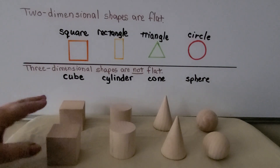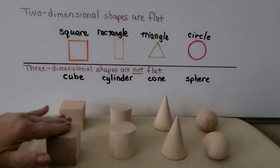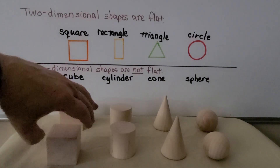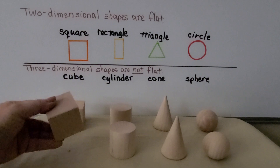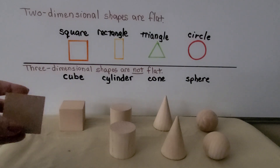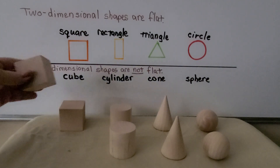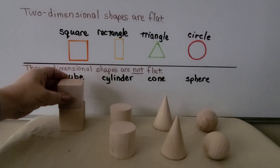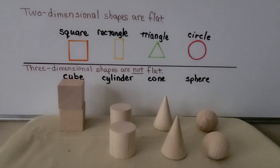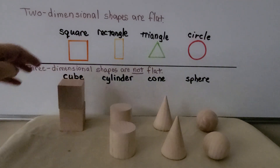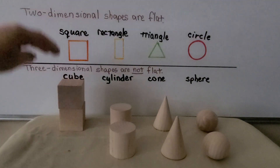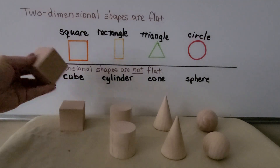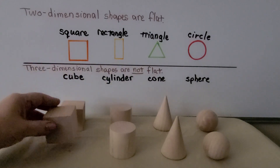A cube has flat surfaces. See the flat surfaces on each side? And we can stack cubes — we can make a tower. We could keep putting cubes on top and make a tower because of the flat surfaces.